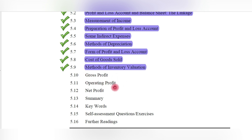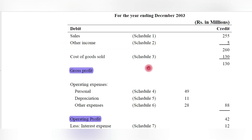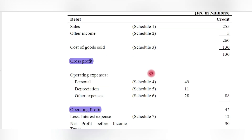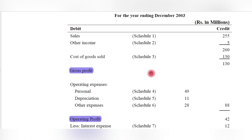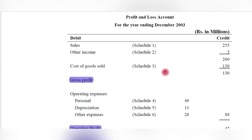In this video, we are going to complete the final three topics: gross profit, operating profit, and net profit. Before understanding these topics, we have to see the example presented in this book. In this example, a sample profit and loss account is given — total sales revenue is 255 rupees, other income is 5 rupees, therefore total sales revenue is 260 rupees.